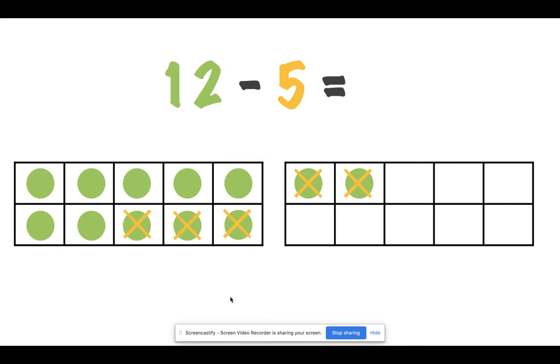How many are we left with? What is our difference? Man, you're so smart. 12 minus 5 equals 7.